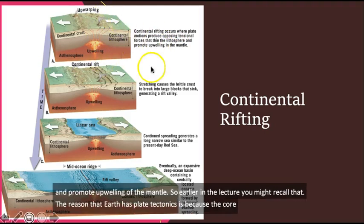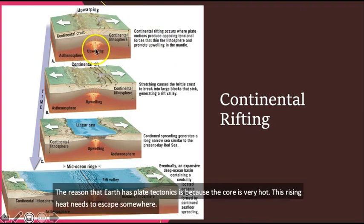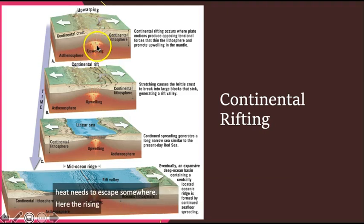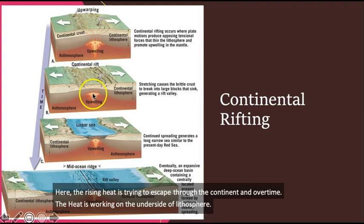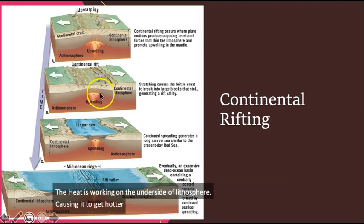So earlier in the lecture, you might recall that the reason that Earth has plate tectonics is because the core is very hot. This rising heat needs to escape somewhere. Here, the rising heat is trying to escape through the continent. And over time, the heat is working on the underside of the lithosphere, causing it to get hotter, weaker, and stretch apart.